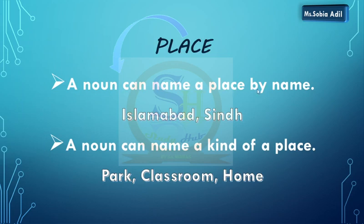A noun can name a place by name — Islamabad, Sindh, etc. It can also name a kind of place. Hum places ko bhi divide karte hain different categories mein. Those places can be a park — ye noun hai — classroom, home. So these are the nouns we use for specific places.